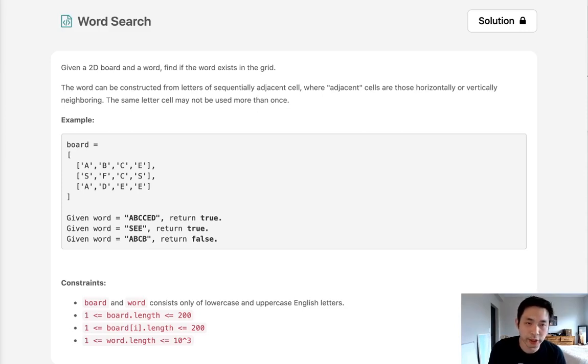Welcome to July's Leaco Challenge. Today's problem is word search. Given a 2D board and a word, find if the word exists in the grid.